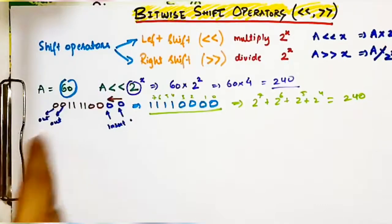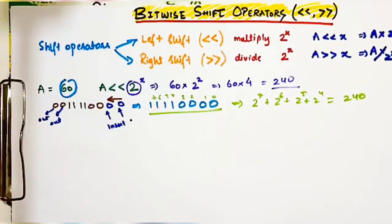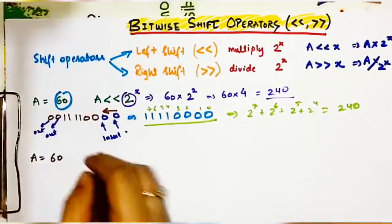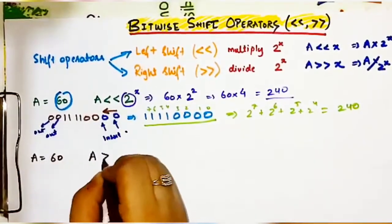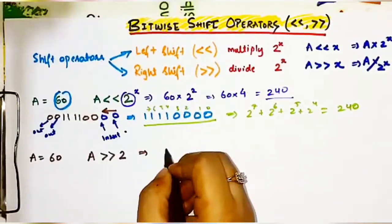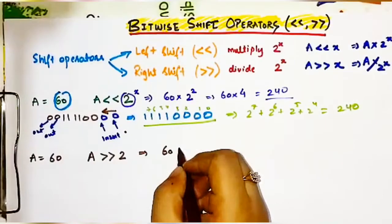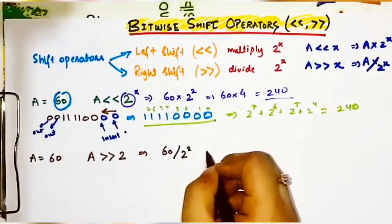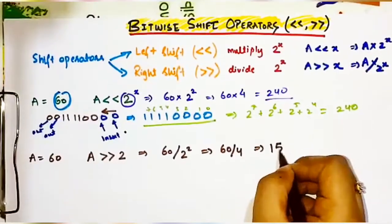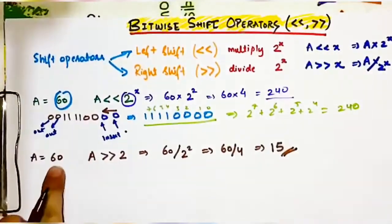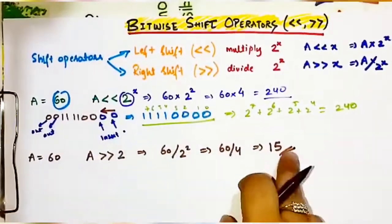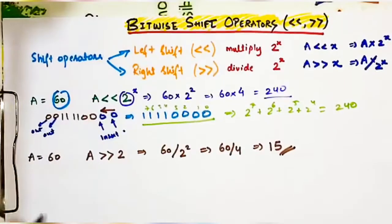We will take the same number. Suppose a is 60 again and you have to find a >> 2, that is right shift by 2. This will be 60 divided by 2 to the power 2, which is 60 divided by 4. The answer is 15. So when the binary number of 60 is right shifted by 2 digits, the output will be 15.